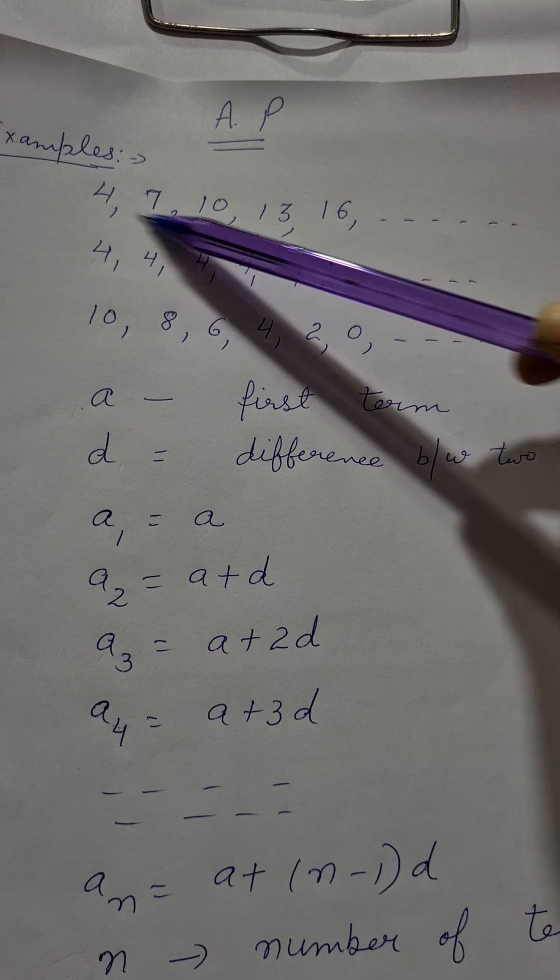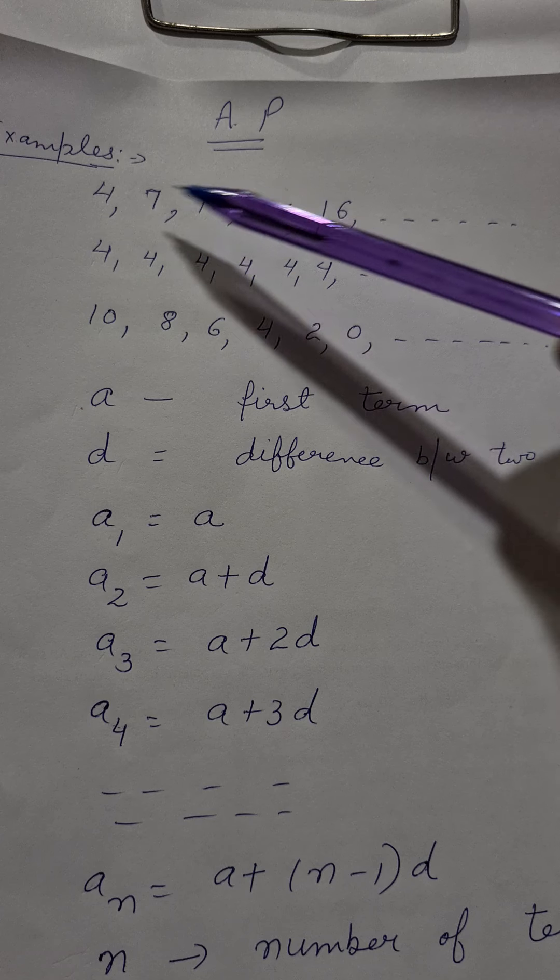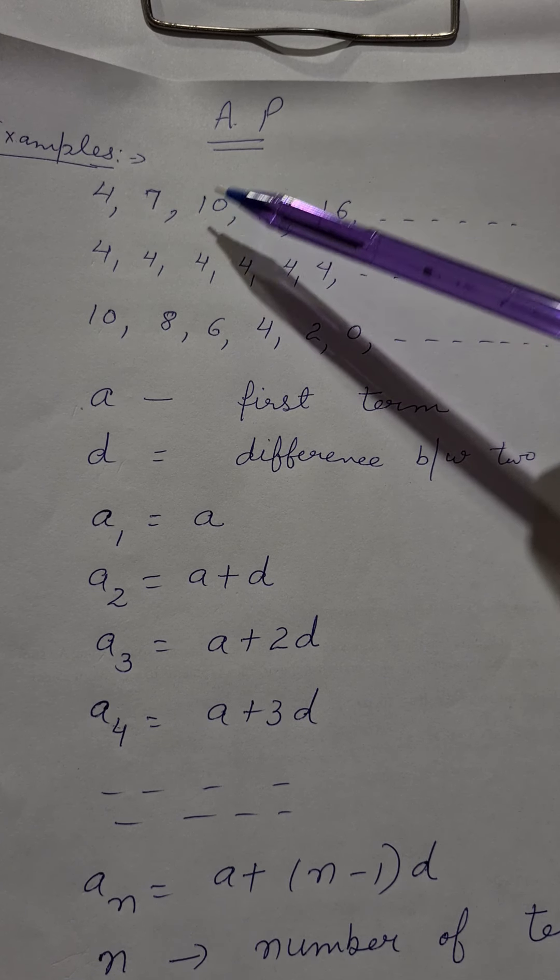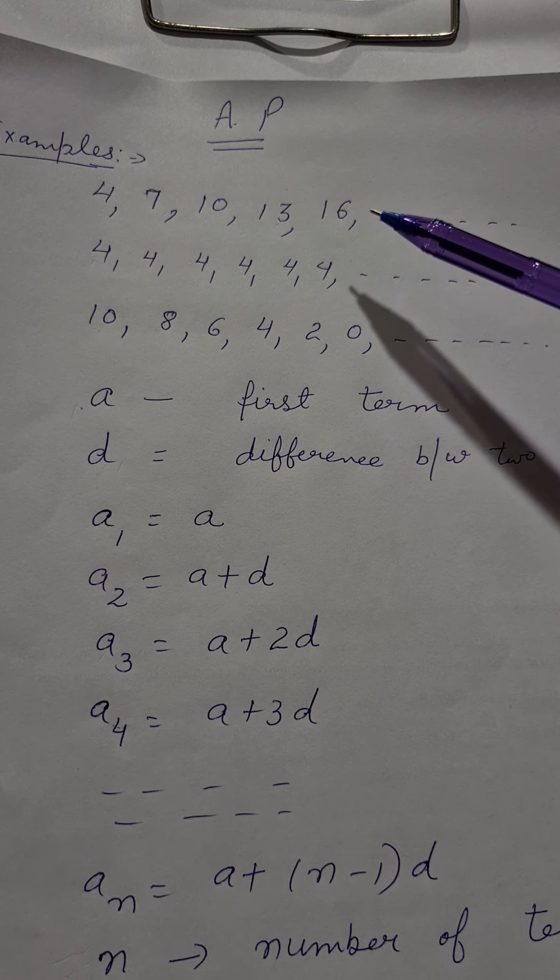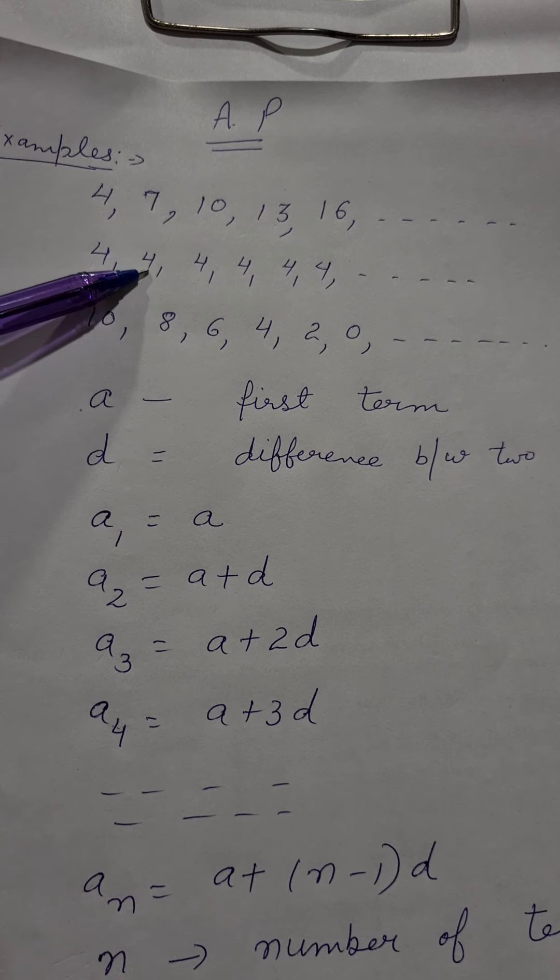What is AP? It's a sequence in which the numbers are increasing. Next number which will come is the previous number plus 3. Which is the first number, next number, next number, next number.